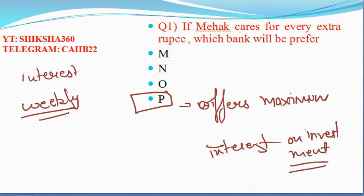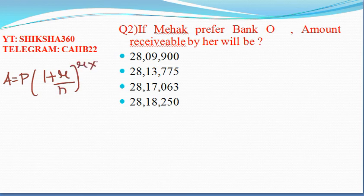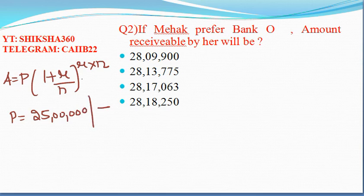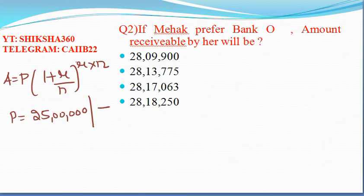The second question asks: if Mahek prefers Bank O, what amount will she receive? The formula is A = P(1 + r/n)^n. Here P is 25 lakh. Bank O credits interest on a monthly basis, so we have to apply the condition accordingly.